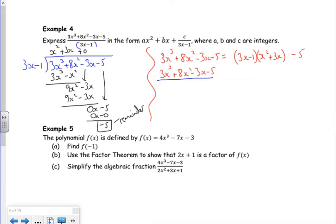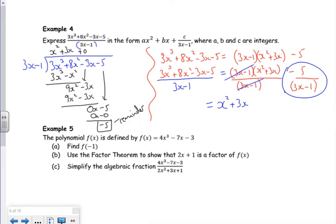So I've got 3x cubed plus 8x squared minus 3x minus 5, all divided by 3x minus 1. Then I've got 3x minus 1 times x squared plus 3x all divided by 3x minus 1, then minus 5 over 3x minus 1. So each term has been divided by 3x minus 1 separately. The 3x minus 1's cancel there, so I'm left with x squared plus 3x, but they don't cancel here. It's minus 5 over 3x minus 1. And people don't like changing it into this form, but that's what it wants. So that's that example done.